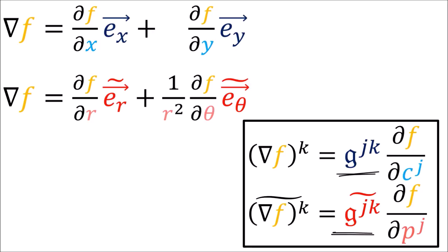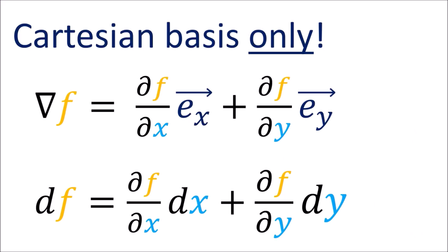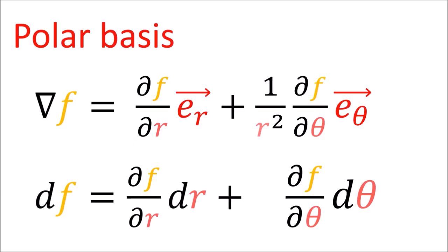The inverse metric tensor components really do belong in this formula for the gradient of f. In the Cartesian coordinate system the inverse metric tensor is just the identity matrix, so we don't need any extra terms other than the partial derivatives. This means the components of del f end up being the exact same as the components of df in Cartesian coordinates, but in other coordinate systems we might need extra terms.